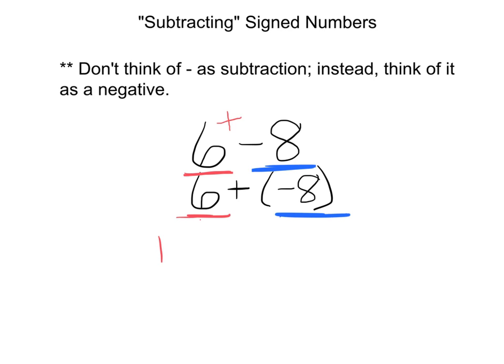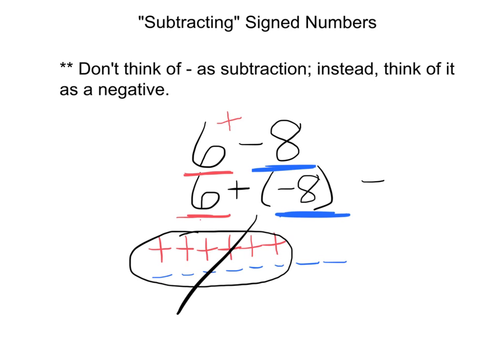Either way, we have 6 positives and 8 negatives. And so that's what we're going to draw a picture of. For our 6 positives, we're going to draw 1, 2, 3, 4, 5, 6 positives. For the 8 negatives, we're going to draw 1, 2, 3, 4, 5, 6, 7, 8 negatives. These 6 positives and these 6 negatives will cancel. And we've got 1, 2 negatives left over. And so the answer is negative 2.